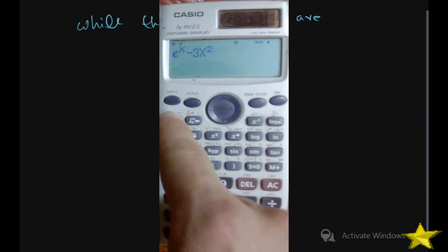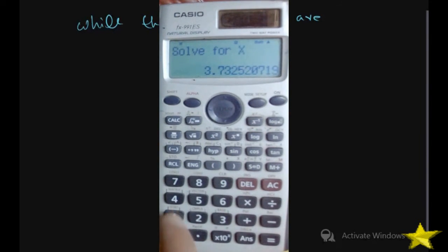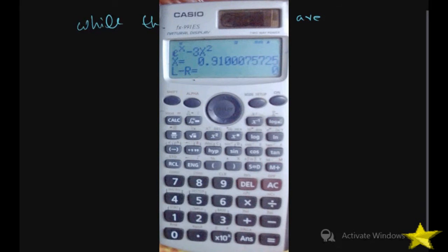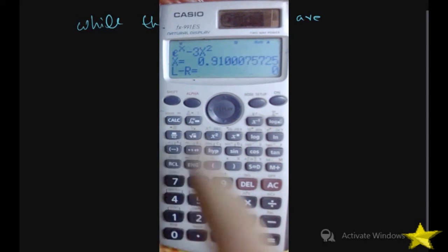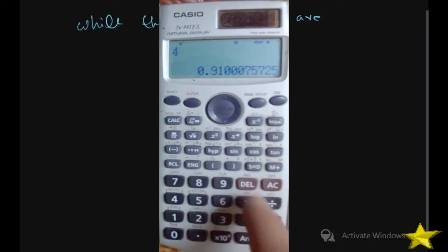Now to find the actual roots, type your function in the calculator, press shift then calc to solve. Enter 1. We get 0.910075725 for the first range. For the second range, press calc and enter 5, because the x5 value is close to this root. We get 3.733079029.